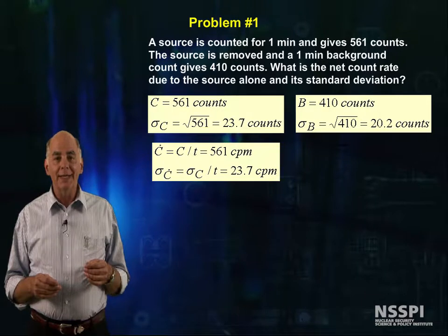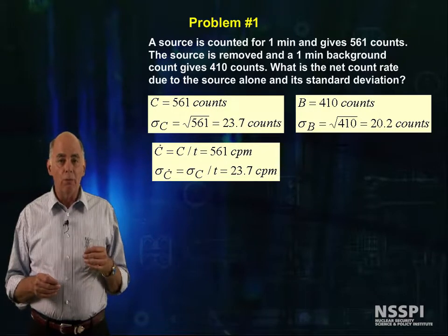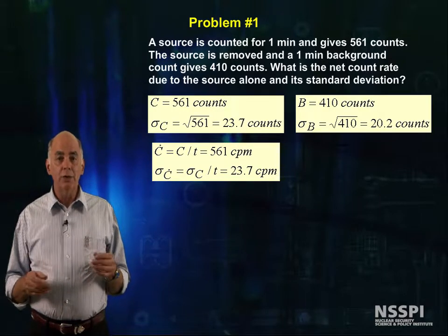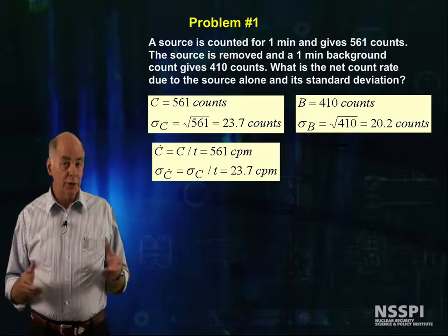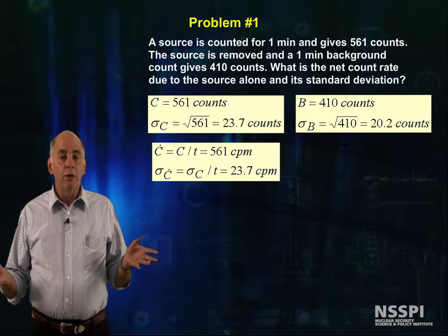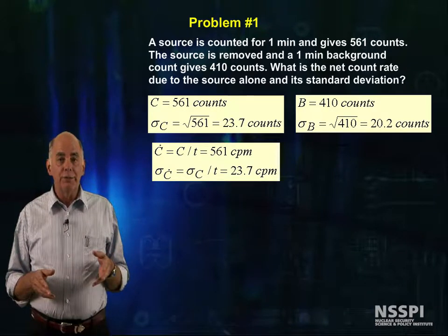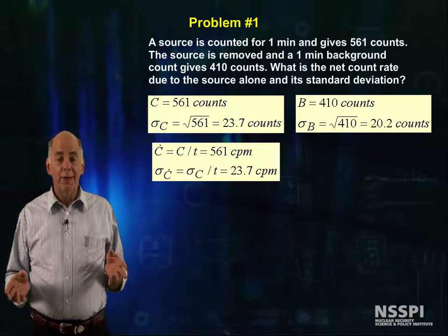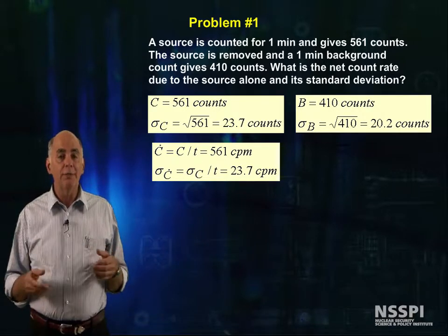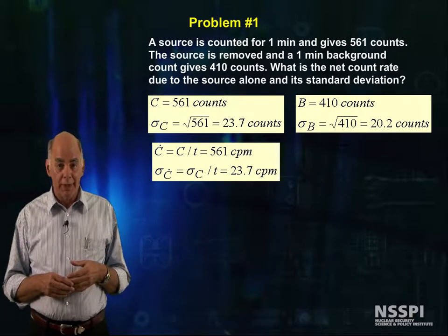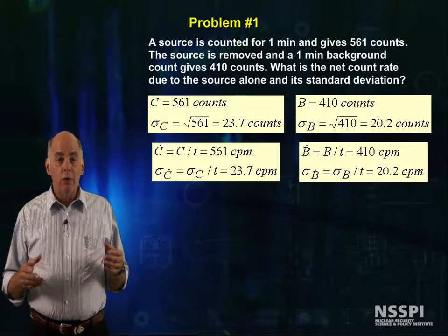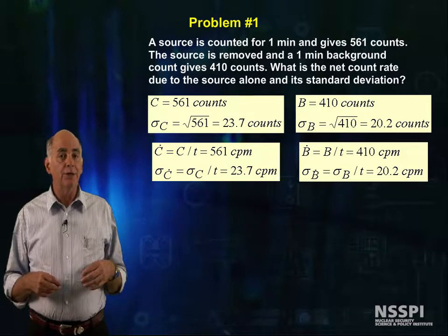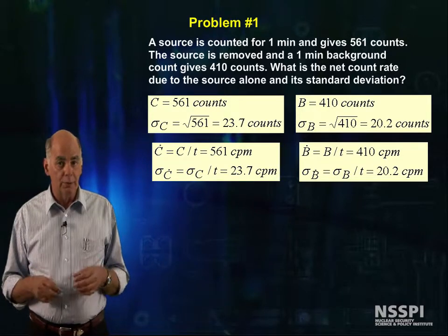If we divide by the time, we get the count rate, and we can assume there is no error in the count time, which, by the way, is a good assumption. Then we get the gross count rate, which is 561 counts per minute with a standard deviation of 23.7 counts per minute. We know that the background count rate is 410 counts per minute with a standard deviation of 20.2 counts per minute.